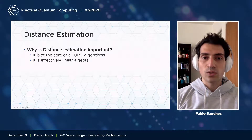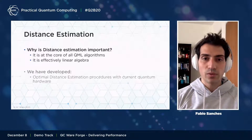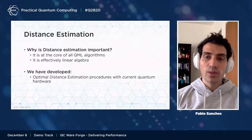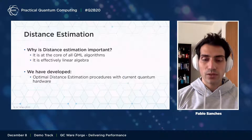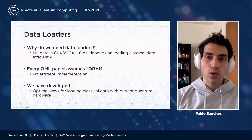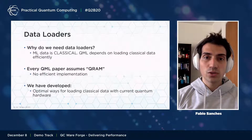Distance estimation is really at the core of a lot of machine learning algorithms, so speeding that up using a quantum computer allows us to speed up a collection of different machine learning algorithms. What we've developed is a way to do distance estimation on a quantum computer that is logarithmic in the dimensionality of the vectors. In addition, to do machine learning we need access to data, and if you're doing quantum algorithms, you need quantum access to classical data — requiring users to load that data onto a quantum computer.